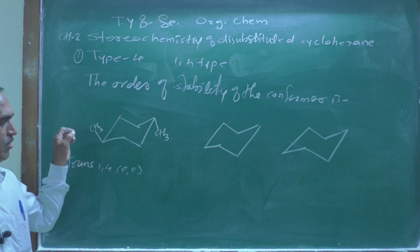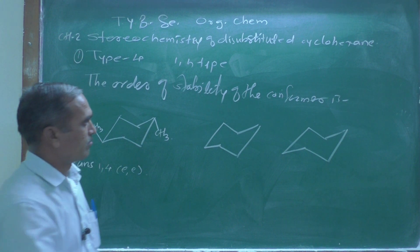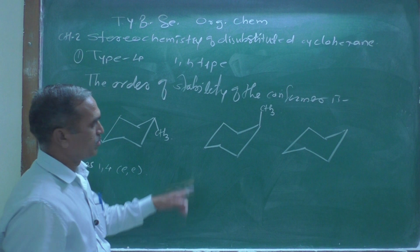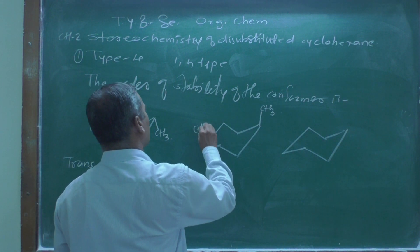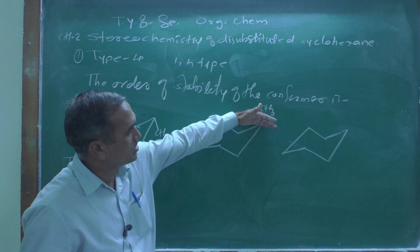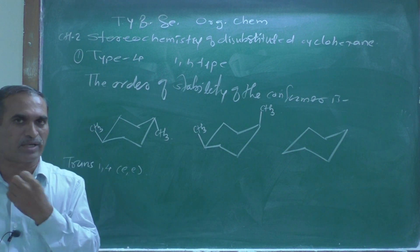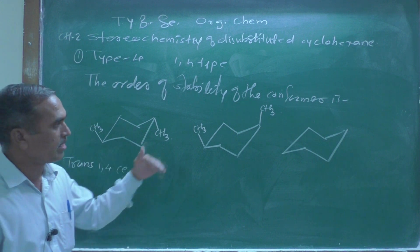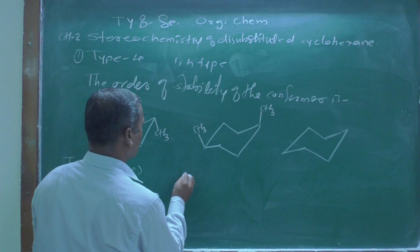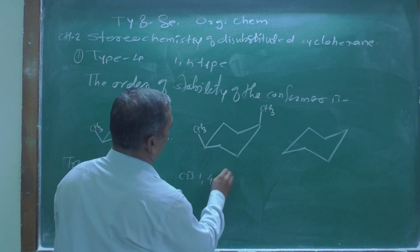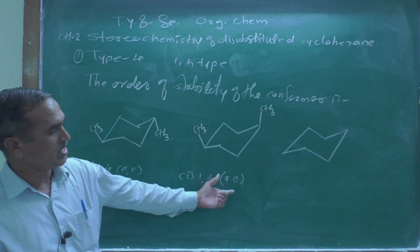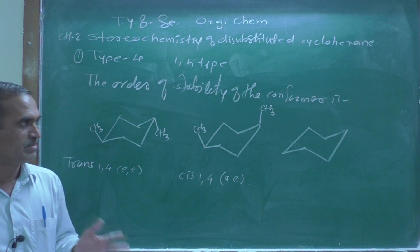Now the second conformer: one methyl group at the axial position at C1 and another methyl group at the equatorial position at C4. Looking at the plane, both methyl groups are above the plane — they are on the same side — so this is cis geometry. This is cis-1,4-dimethylcyclohexane in the axial-equatorial (ae) form.